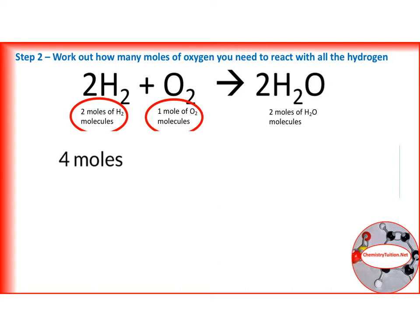So in going from hydrogen to oxygen in terms of moles, we have to halve it. So we need to do the same for four. So if we halve four, we get two moles of oxygen.